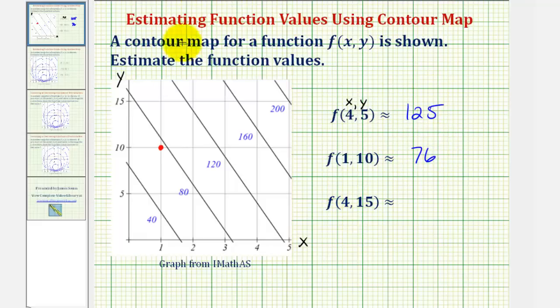And for the last function value, we have f of four comma 15. Well, the point four 15 is here. Notice how this point falls in between where we have function values of 160 and 200, but notice how the point is closer to the contour line where the function value is 160. Halfway between these two contour lines would be 180, so let's estimate the function value to be 175.